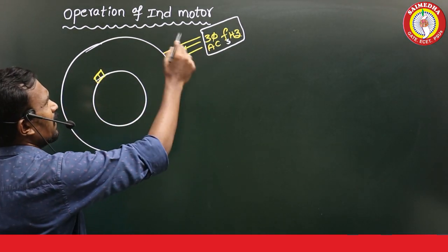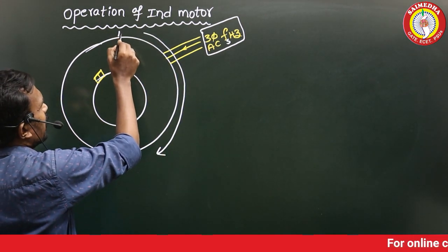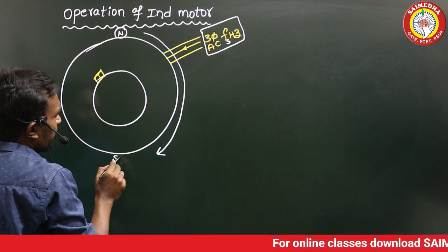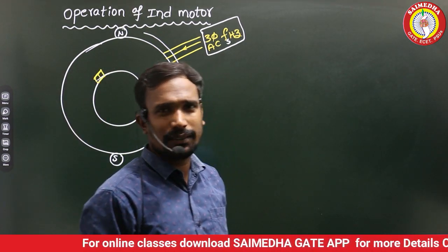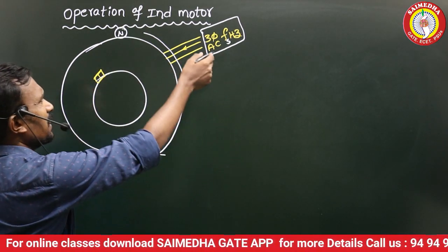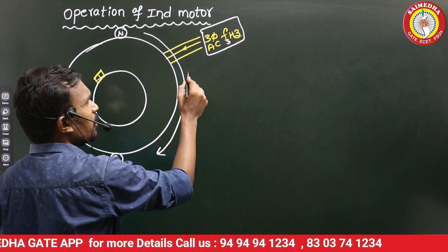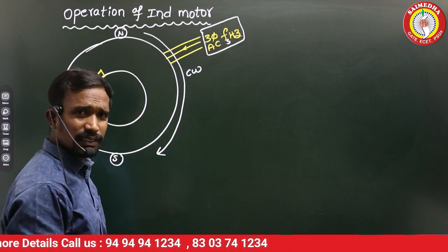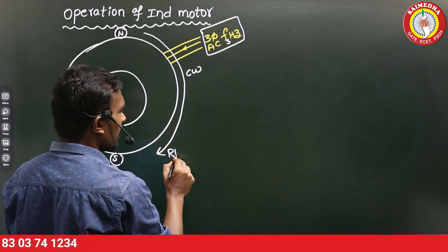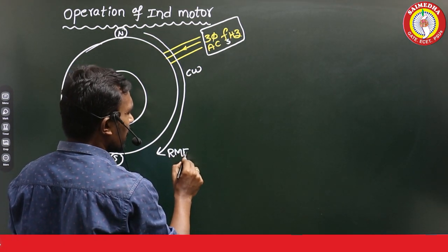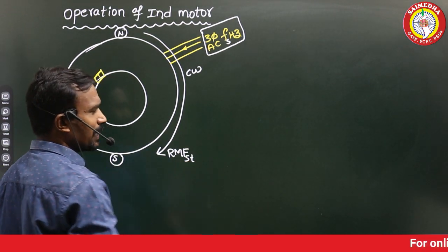When three-phase AC supply is given to the stator, a magnetic field will be created in the stator. It may be two-pole, four-pole, six-pole, or whatever. Apply the three-phase AC supply — immediately, the magnetic field will be created. That magnetic field rotates in the clockwise direction. That's why this is called the rotating magnetic field — specifically, the stator's rotating magnetic field.